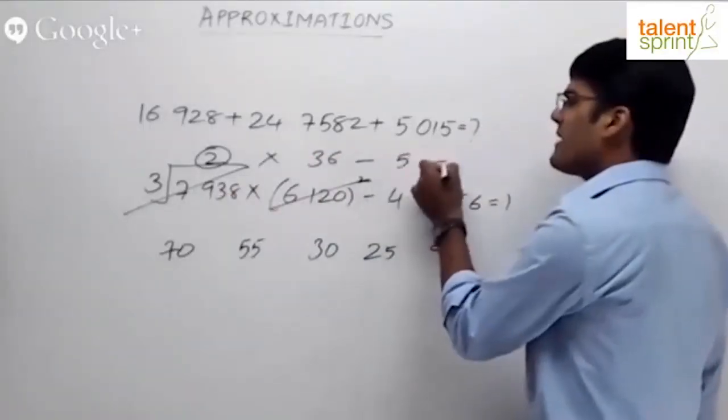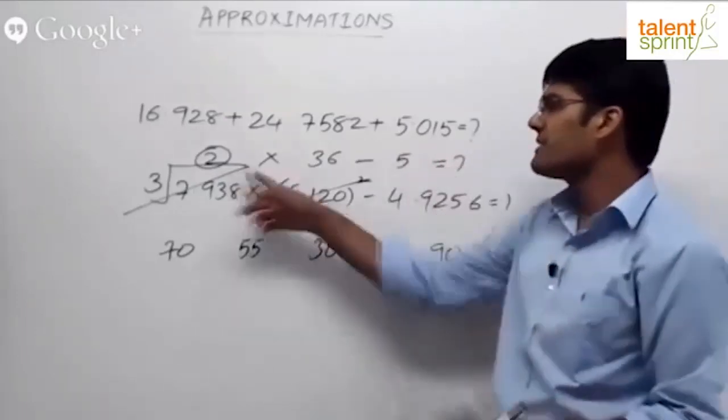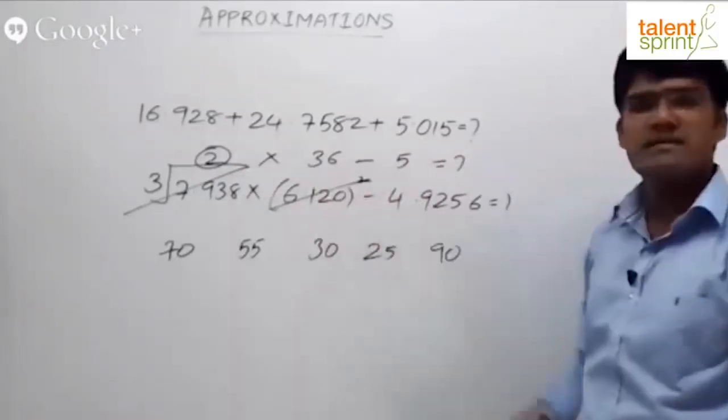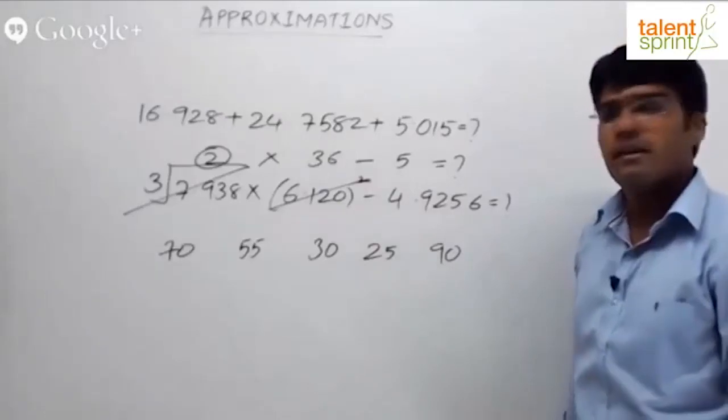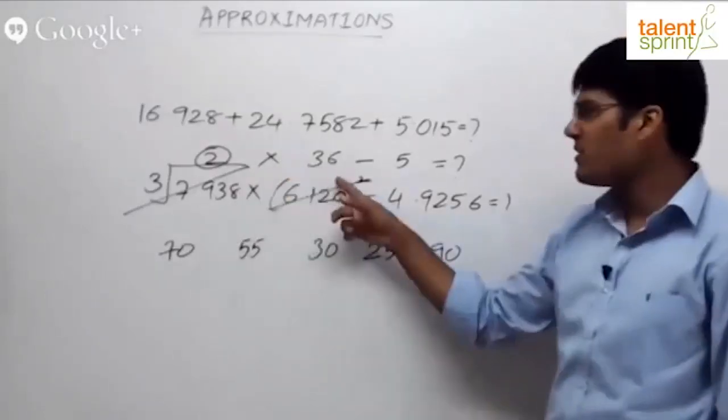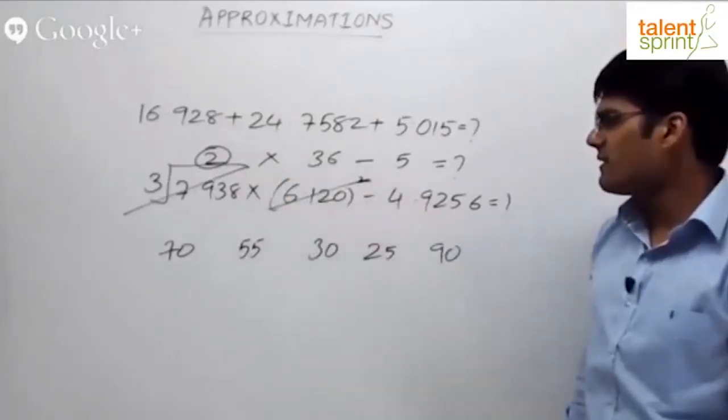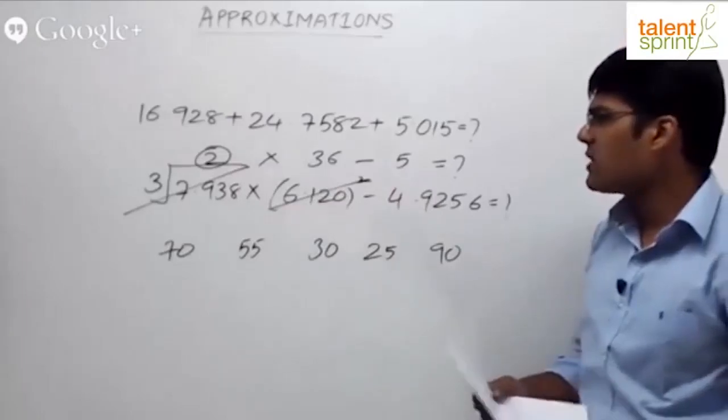What is the answer here? 2 into 36 is 72, 72 minus 5 is 67. Get the point? 2 into 36 is 72, 72 minus 5 is 67.